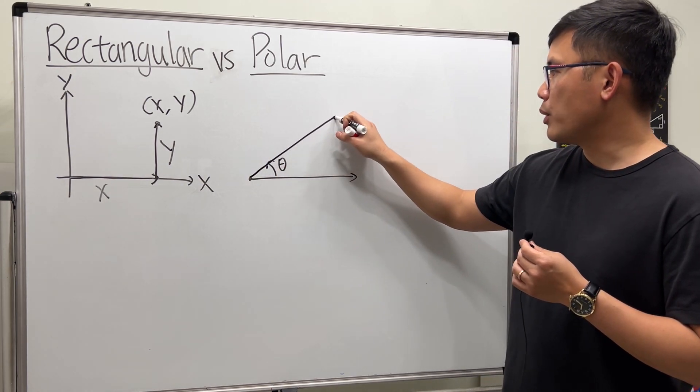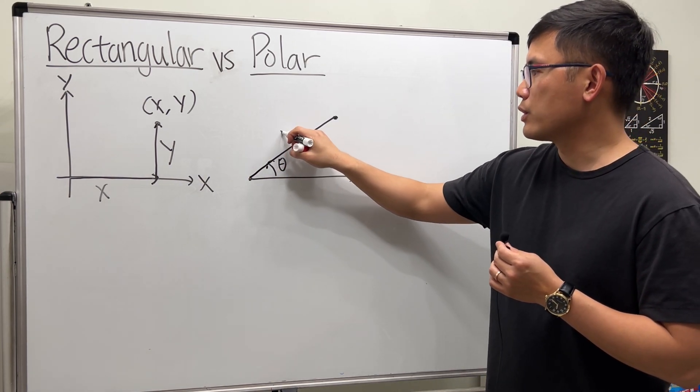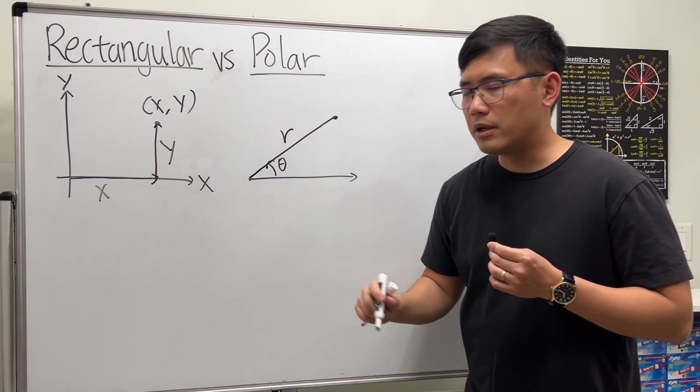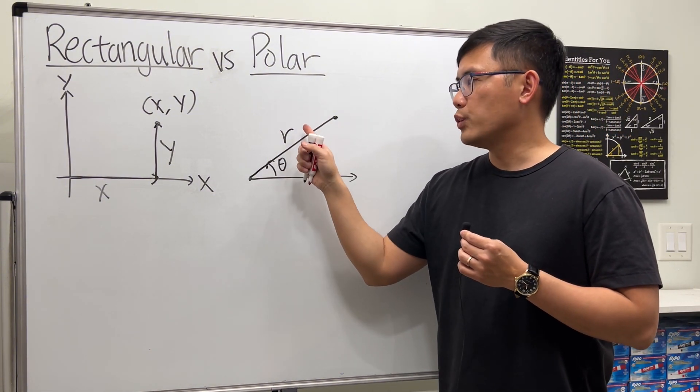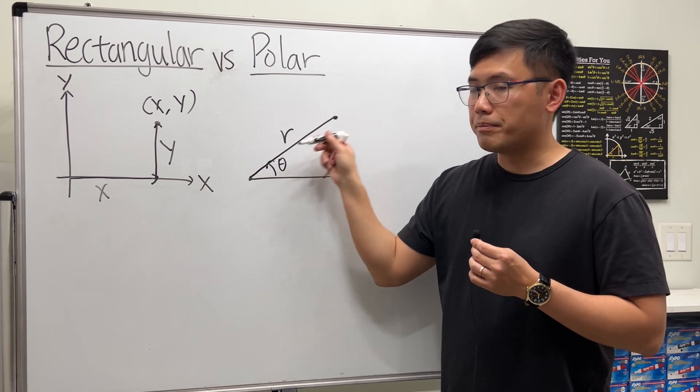Then we will have to know how far we have to go from the origin to the point, and that distance we are going to call r. But remember, we can go backwards as well, so we will use negative r if you are going backwards.